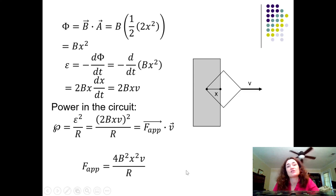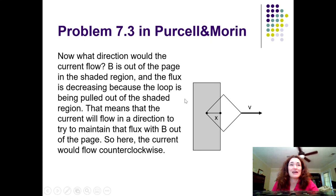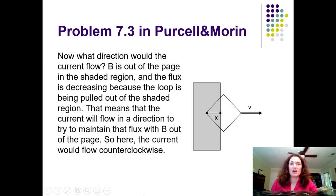Now, what direction would the current flow in this circuit? B is out of the page in the shaded region, and as we pull the loop to the right the shaded area decreases, so the flux is decreasing. The current will flow in a direction to try to maintain that flux out of the page. With the thumb pointing out toward our faces, the fingers curl counterclockwise. So via Lenz's Law, the current flows counterclockwise. I hope that helps — if you have any questions, let me know, and I'll see you around. Bye.